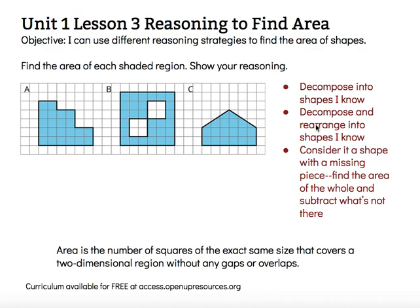I can also consider it as a shape with a missing piece — look at the whole shape and then identify the parts that aren't there, taking away the white parts that aren't really part of that shape.